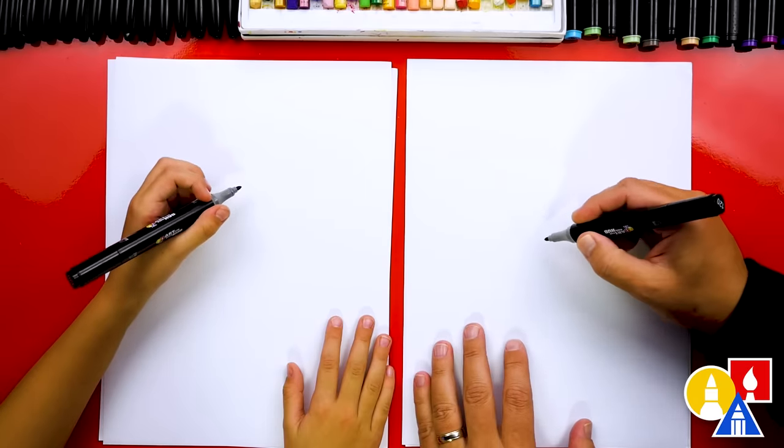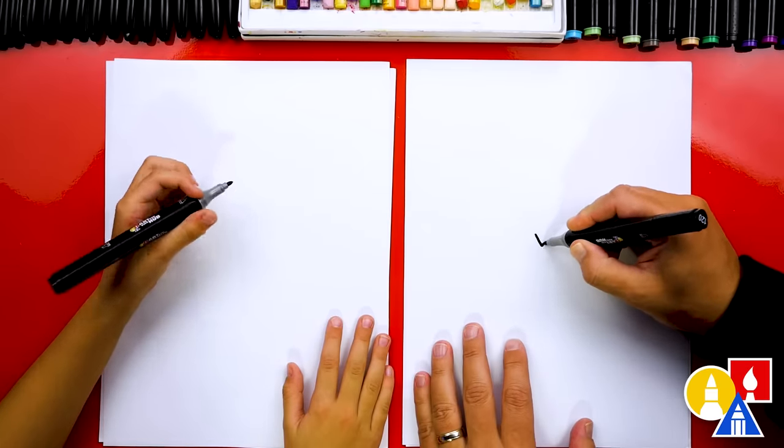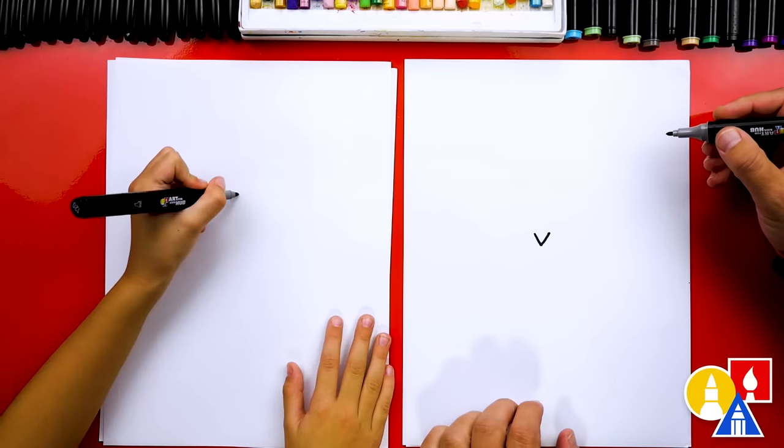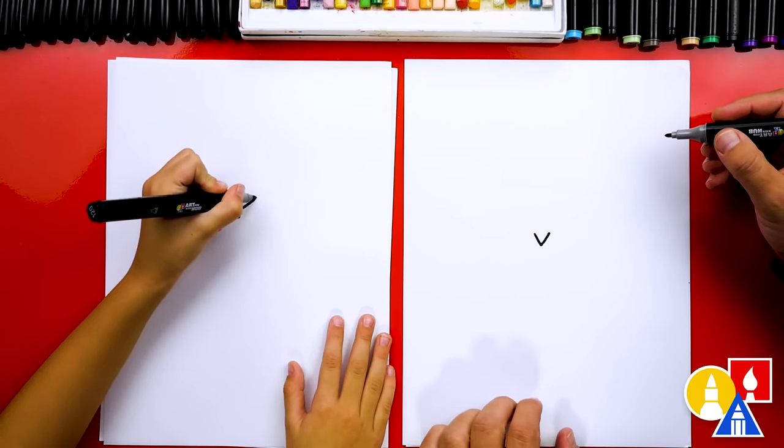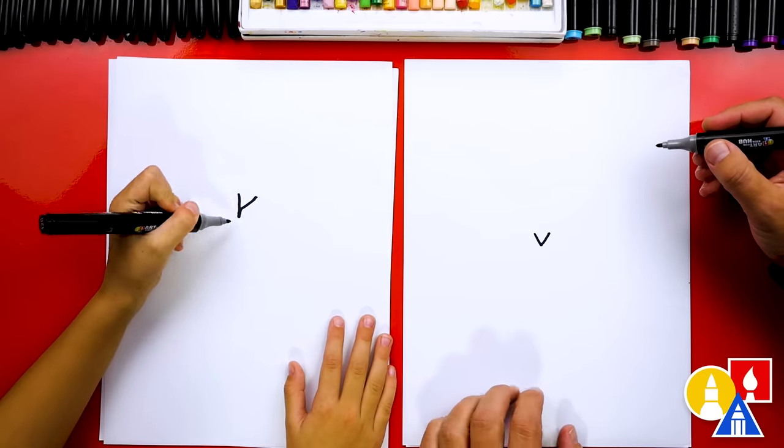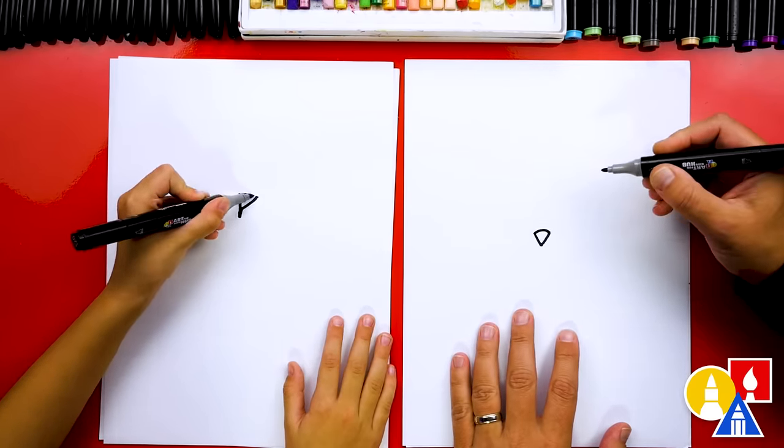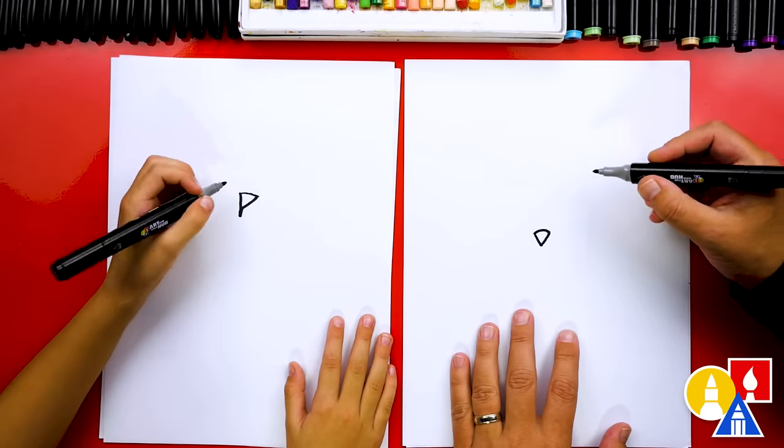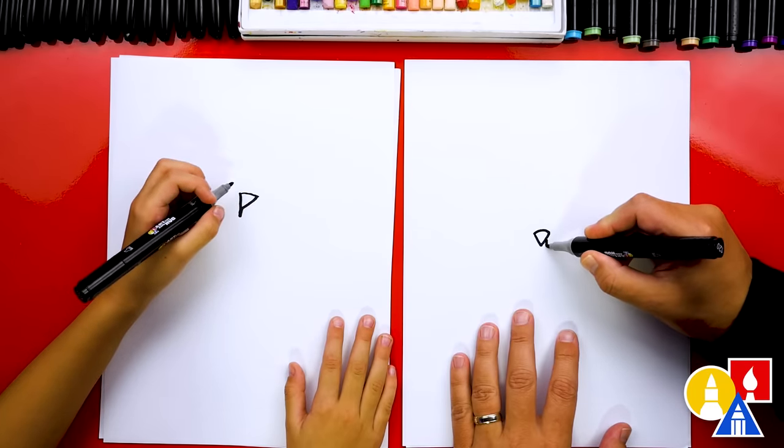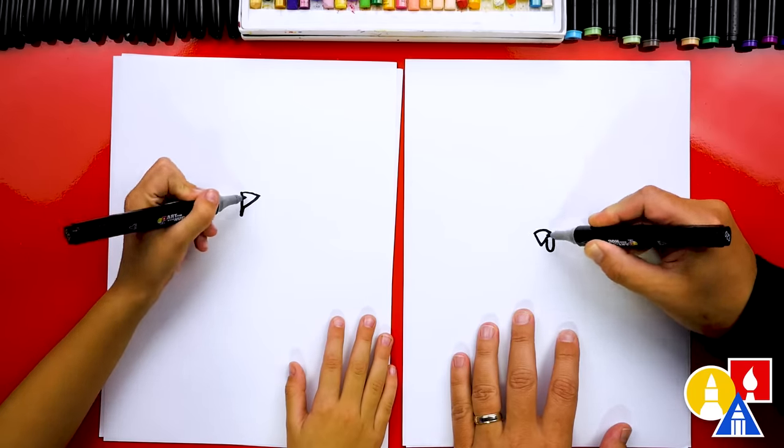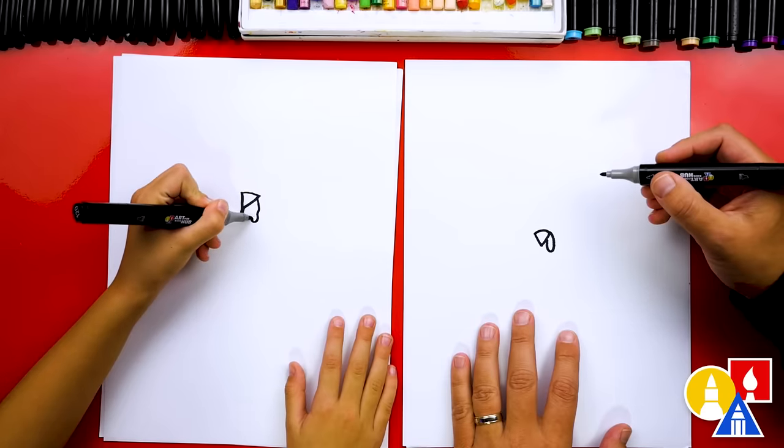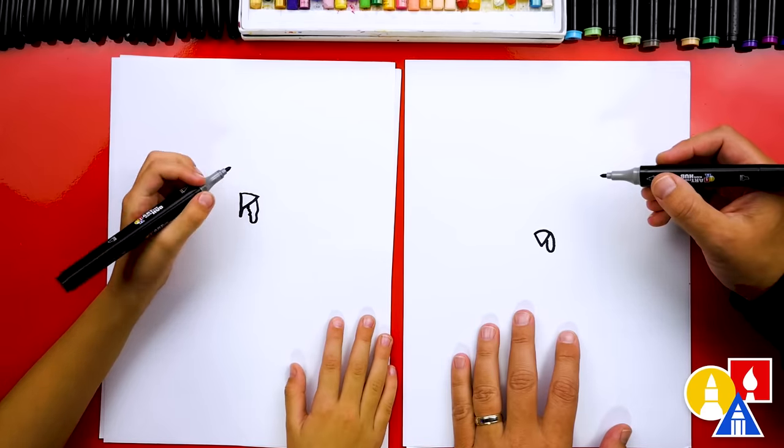First, let's start with our turkey's beak. We're going to draw the letter V in the middle of our paper. I like how sharp your beak is, it's really pointy.